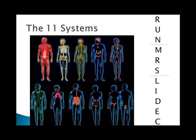The eleven organ systems contribute to the survival of living cells of the vertebrate body. You can remember them using the mnemonic 'RUN MRS LYDECK': Respiratory, Urinary, Nervous, Muscular, Reproductive, Skeletal, Lymphatic, Integumentary, Digestive, Endocrine, and Cardiovascular. That helps you remember all eleven systems so you don't forget one.